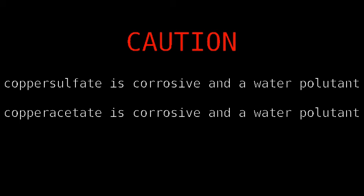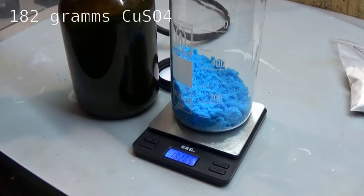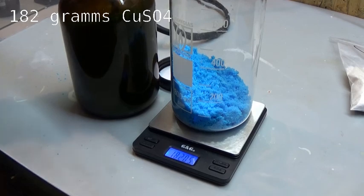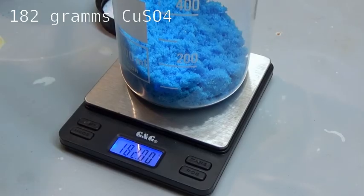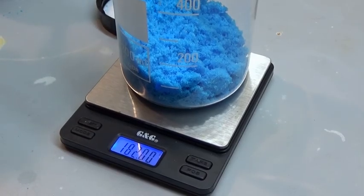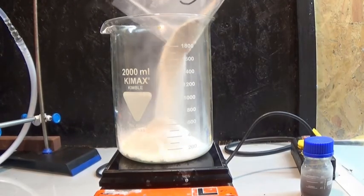Hello you all, in this part of the lead acetate synthesis I am preparing copper acetate by reacting the previously made calcium acetate with copper sulfate. For this I weighed out 182 grams copper sulfate.